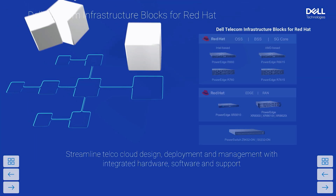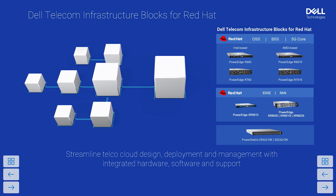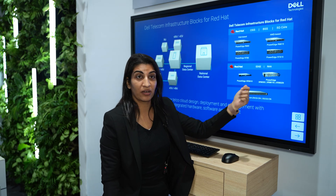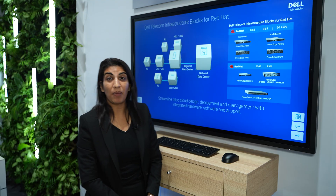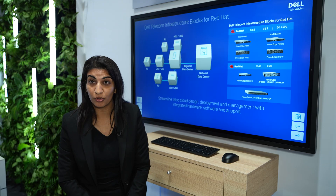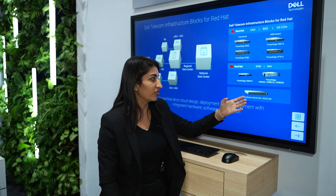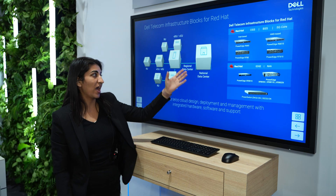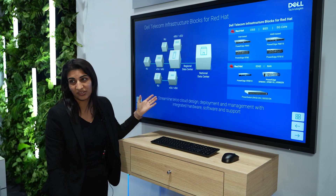In Dell Telecom Infrastructure Blocks for Red Hat, we have Intel-based servers: R660 and R6760. We also have AMD servers like R6615 and R7615. To support Edge and RAN use cases, we have XR8000 servers — that is 8610, 8620D, and XR5610. We have also introduced Dell Power Switches as part of the 4.0 release, providing support so you can do a seamless deployment of your national data centers and regional data centers along with the cell sites.